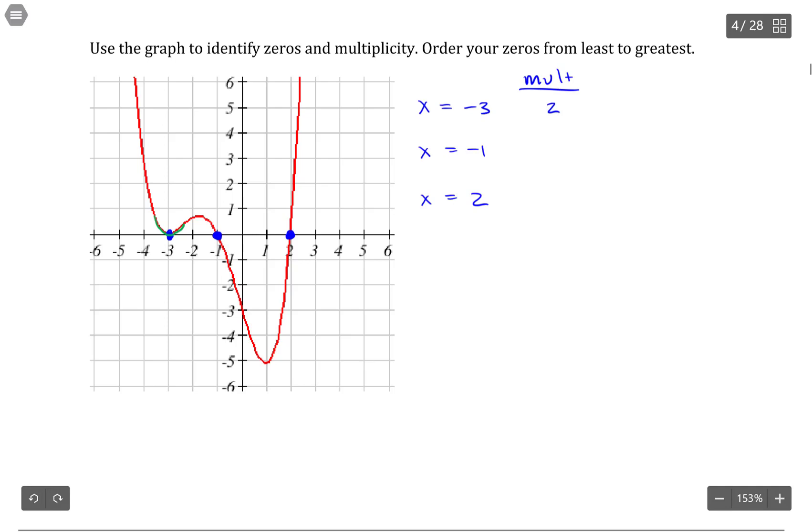And if around the zero it looks like the graph is just a line passing through the axis, then that means you have degree one zero, which is the same thing as saying multiplicity one.